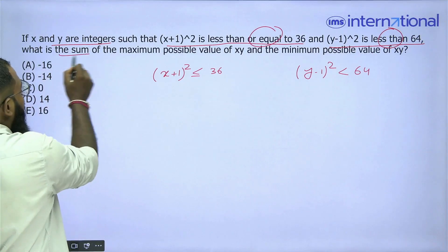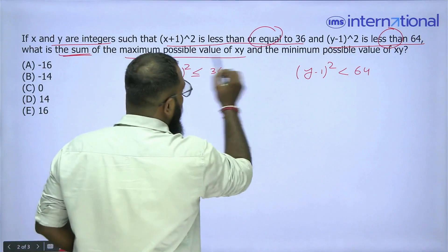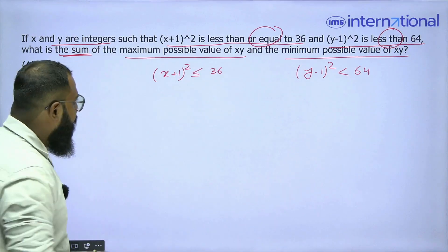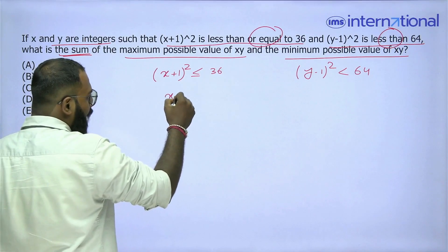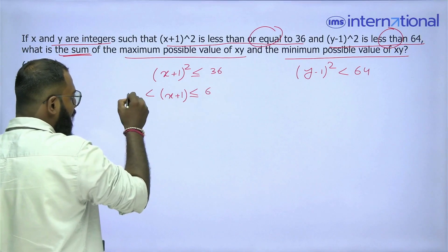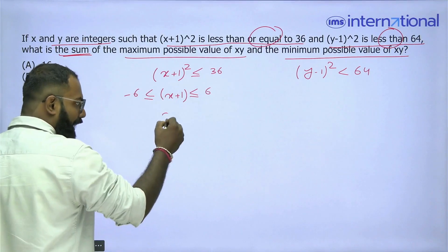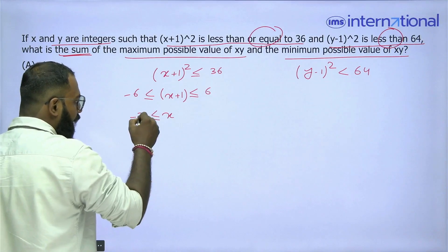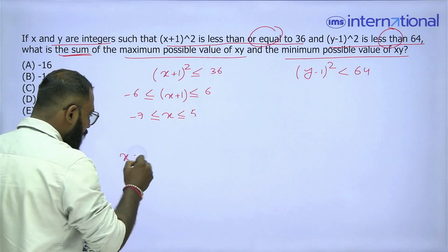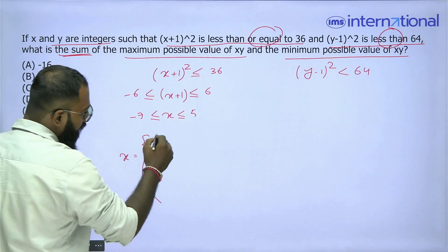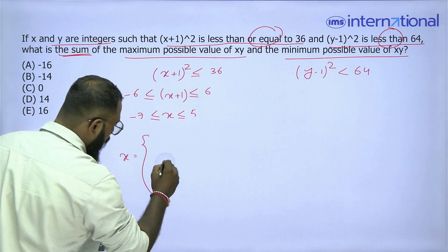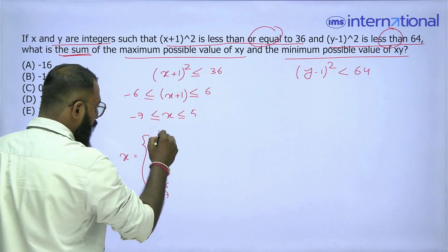Now we have to find the sum of the maximum possible value of xy and the minimum possible value of xy. Here you can see that x+1 is going to lie between -6 and 6, and x is going to lie between -7 and 5. That means x is going to be something like -7, -6, -5, and so on up to 3, 4, 5.